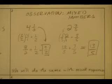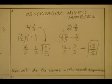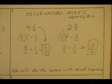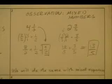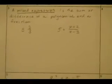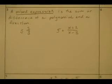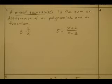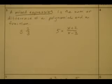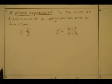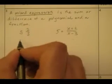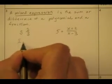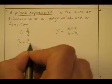Mixed expressions are just like mixed numbers but with algebraic expressions — that's what an expression is, it's an algebraic number. So a mixed expression is the sum or difference of a polynomial and a fraction. Let's look at this: five and two-thirds. I write it as five over one plus two over three.